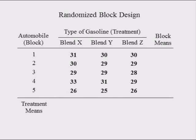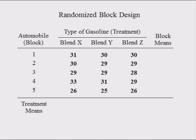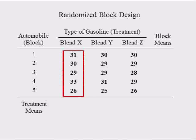Each row represents a car driven using three different types of gasoline. The first car might have been a blue Nissan; the second car might have been a red Honda, etc. The number in the Blend X column in row 1 — 31 — is the MPG that the blue Nissan got using Blend X gasoline. The number to the right of it is the MPG that the same car got using Blend Y gasoline. The number 30 in the second row and Blend X column is the MPG that the red Honda got using Blend X gasoline.